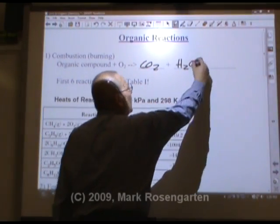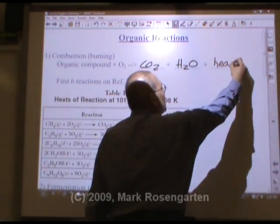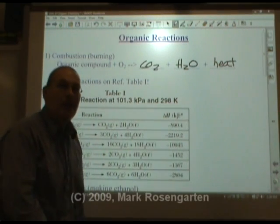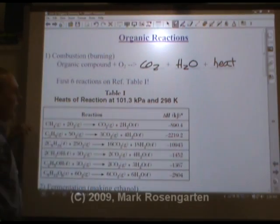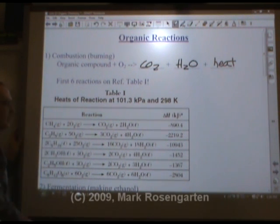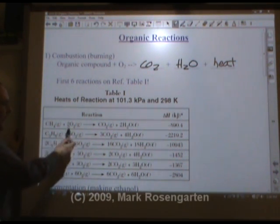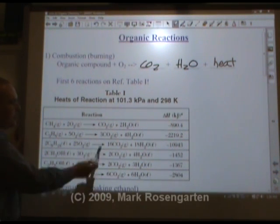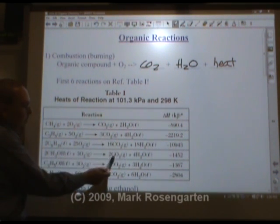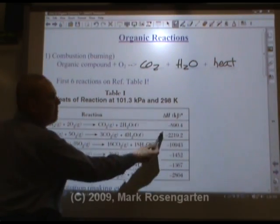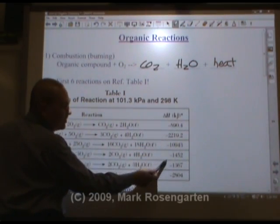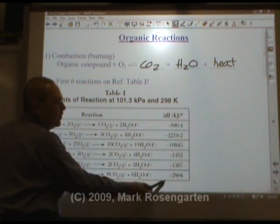Combustion produces water vapor and lots and lots of heat — it's a very exothermic reaction, which is why we use it for heating and cooking. The first six reactions on Reference Table I are all combustions. They all have organic compounds that react with oxygen to produce carbon dioxide and water vapor, and look at how enormously exothermic these reactions are — that's combustion.